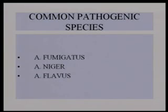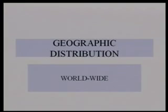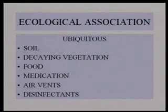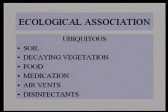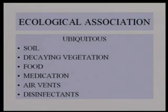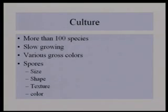There are probably 900 species of this organism. The three most common are Aspergillus fumigatus, Aspergillus niger, and Aspergillus flavus. They occur worldwide — in soil, decaying vegetation, foods, medications, and air vents. This was a big problem in the early days of heart surgery, with patients infected before HEPA filters were standard in operating room air systems, especially when construction nearby put organisms into the air.